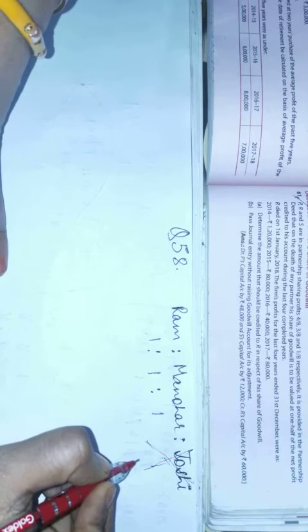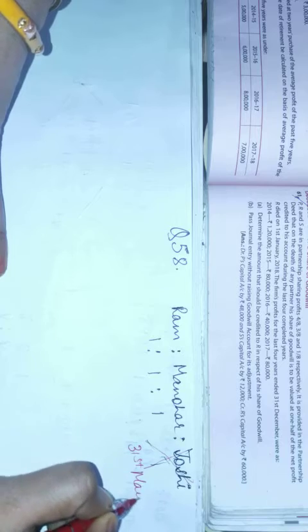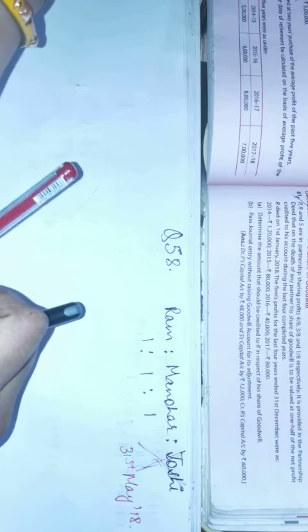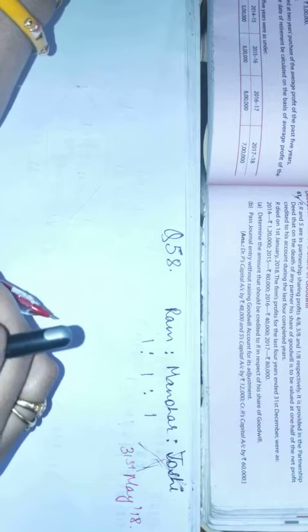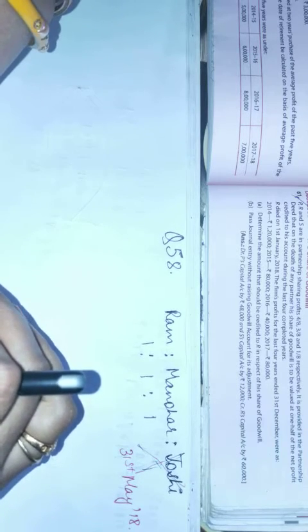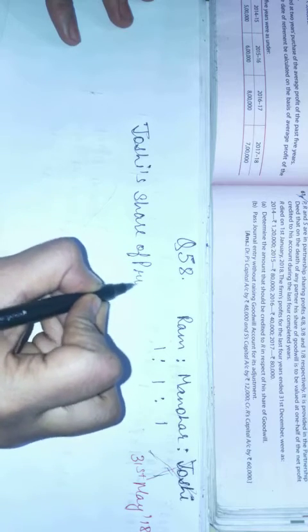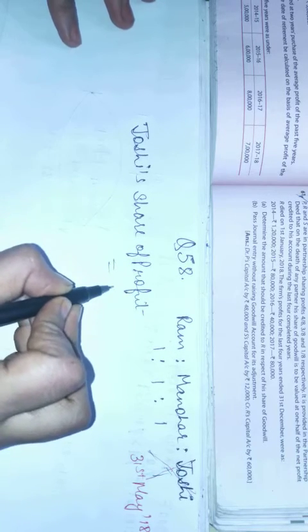Here we have to calculate his share of profit as well as pass journal entry. Their share is not given here. Let me go through again - nothing is given. So we assume they are equal partners, that is 1:1:1. Now Joshi died. He died on which date? The date is 31st May 2018. His share of profit from the last date of closure was to be calculated on the basis of 3 years, 3 complete financial years. The profit given for 3 years - on this basis we have to calculate, meaning on time basis we have to calculate. Now let's see what happens. Joshi's share of profit is equal to 3 years' profit added together: 7000 plus 8000 plus 9000.